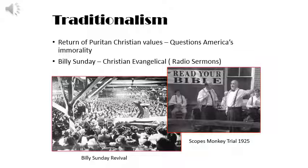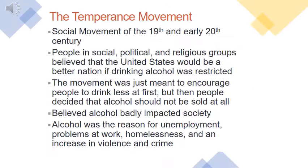One of the most popular evangelical preachers of his time was Billy Sunday. Traditionalism and Puritan views helped usher in the temperance movement — a social movement of the 19th and early 20th centuries where people in social, political, and religious groups believed the United States would be a better nation if drinking alcohol was restricted. The movement was meant to encourage people to drink less at first, but then people decided alcohol should not be sold at all, believing alcohol badly impacted society, morals, and was the main reason for unemployment, homelessness, and problems at work.